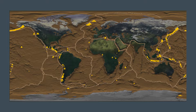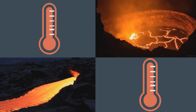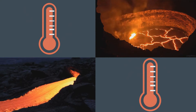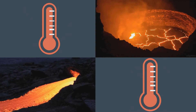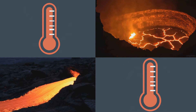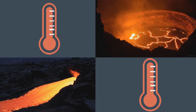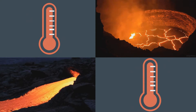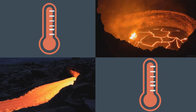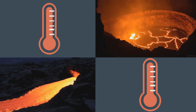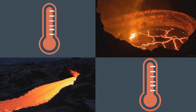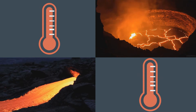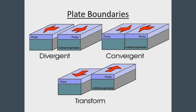The difference between lava and magma: magma is liquid rock inside a volcano, and lava is liquid rock that flows out of a volcano.